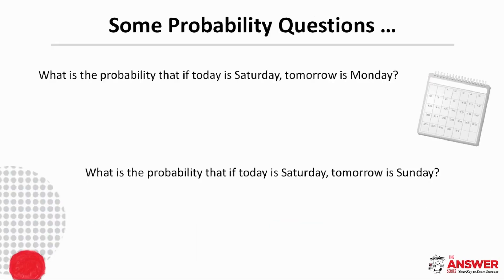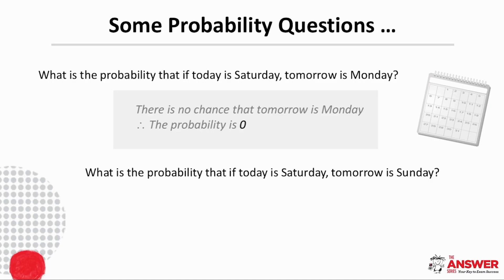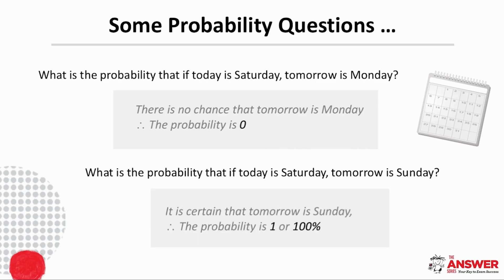Let's have a look now at some probability questions. This first question asks what the probability is of tomorrow being Monday if today is Saturday. This is, of course, impossible, so we say the probability of tomorrow being Monday is zero. Next, what is the probability that if today is Saturday, tomorrow is Sunday? The probability is one or a hundred percent because the day after Saturday is definitely Sunday.